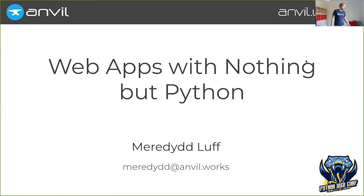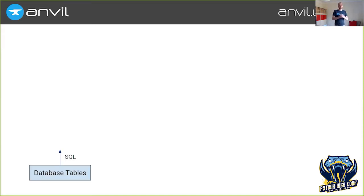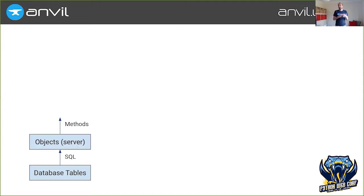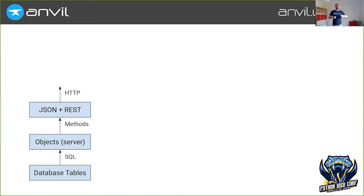If you're writing a traditional web application, your data probably starts as rows in a database table accessed by SQL, which is a very sensible way for data to be represented. Except you're going to immediately transform those into objects in your server-side code, probably Python objects, with methods and attributes to access them. But of course, they're not going to stay like that — you're going to re-represent those as JSON exposed over HTTP endpoints, with a huge number of endpoints and a weirdly limited set of verbs like GET, POST, PUT, DELETE.